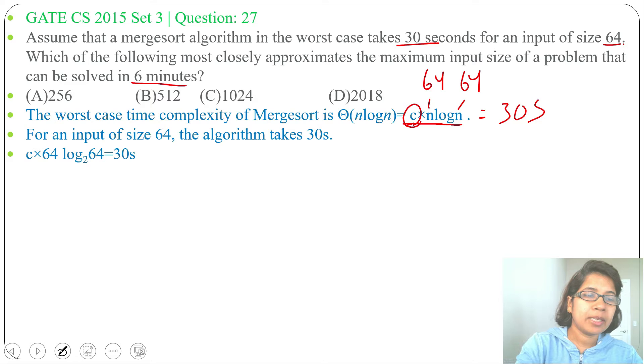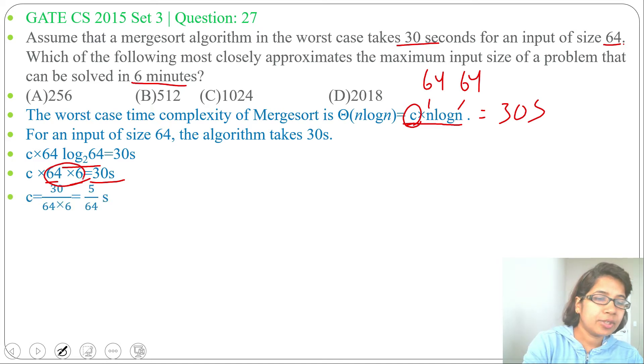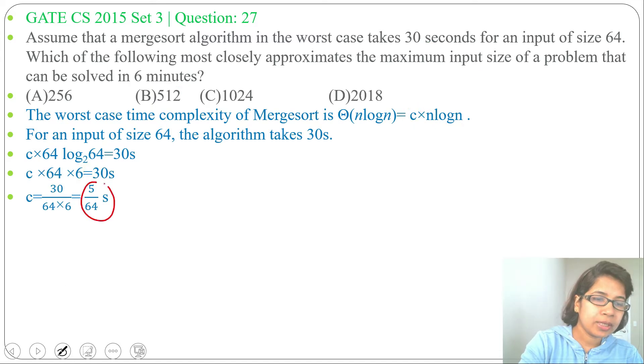C × 64 × log₂64 equals to 30 seconds. Log₂64 equals to 6, so C × 64 × 6 equals to 30 seconds. What will be the C value? We will take this to the right side. C will be 30 divided by 64 × 6. So 30 divided by 6 is 5, we got 5/64 seconds. Now we got the C value and we have the time that is 6 minutes.